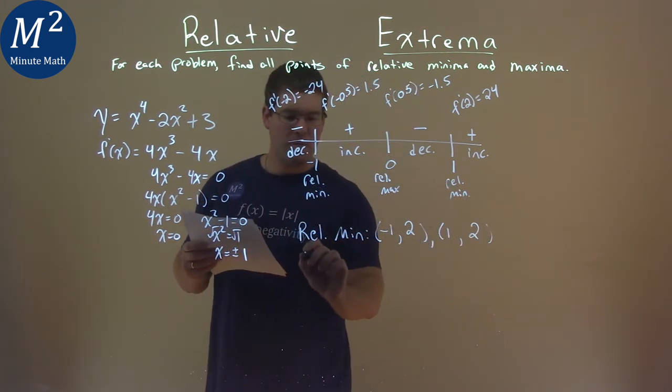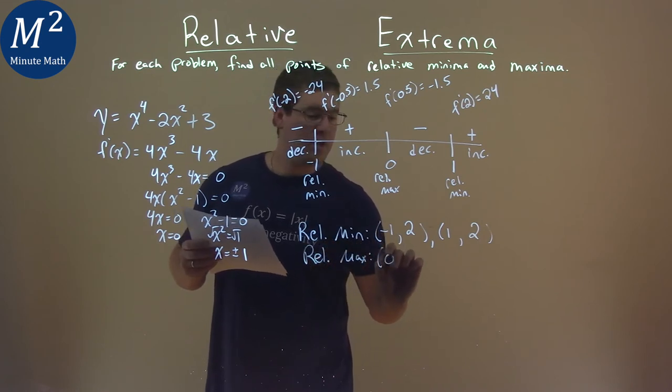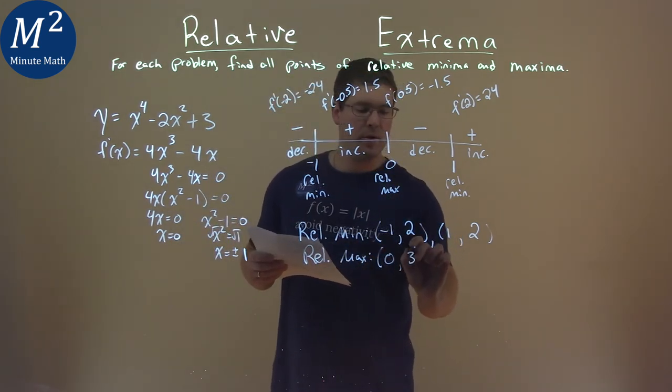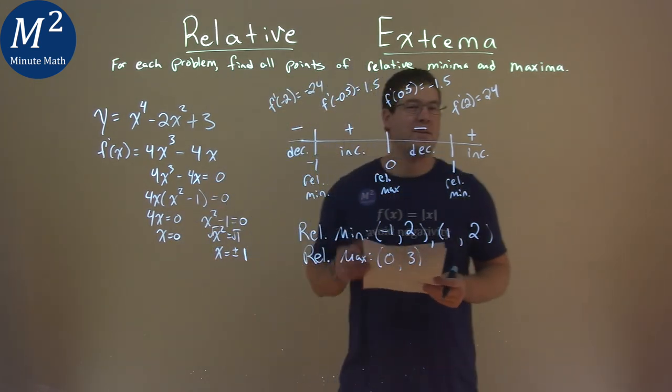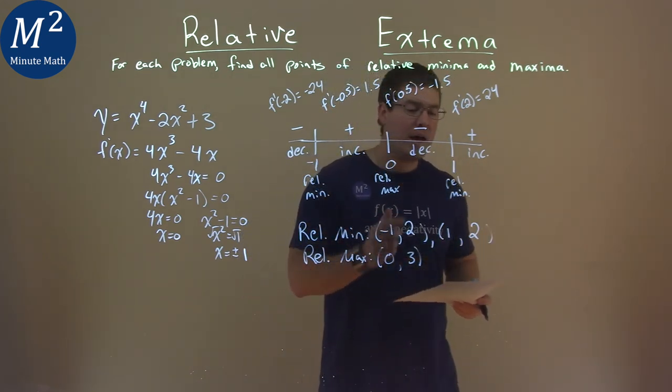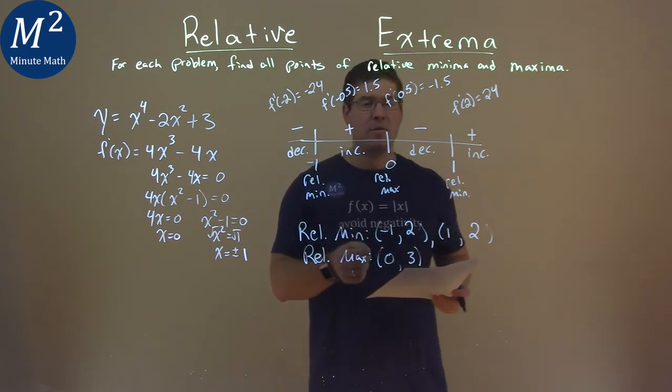For the maximum, we have a relative max. The x value is 0, plug that into our original function, and the y value comes out to be 3. And so our final answer here is we have a relative minimum at negative 1 comma 2, and at 1 comma 2, and we have a relative maximum at 0 comma 3.